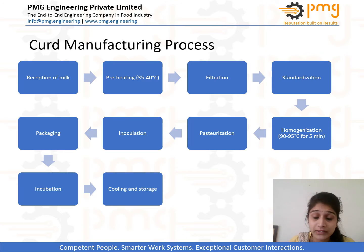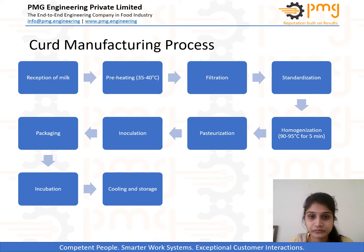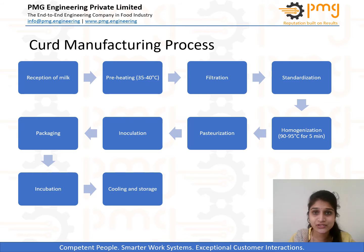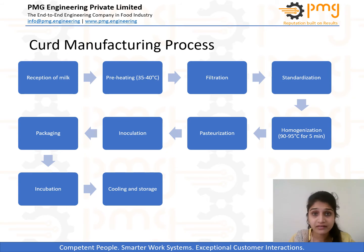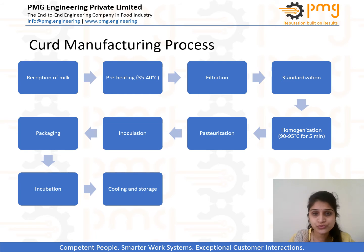Once the milk passes the quality parameters it is sent for the preheating process, where chilled milk is heated to about 40°C to facilitate easy separation of butter fat during standardization. After preheating, the milk is sent for filtration where large solid particles are removed by straining through tubular metallic filters. A centrifugal clarifier may also be used to remove soils and sediment from the milk.